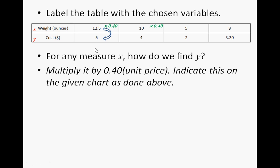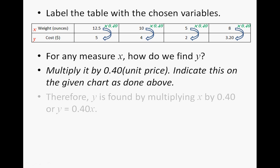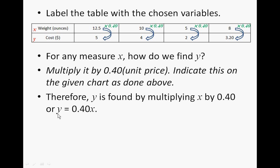Go ahead and do that with the second column — we're multiplying by 40 cents, and 10 times 40 cents is going to be $4. Do the same thing for the third and fourth columns. Therefore, Y is found by multiplying X by 40 cents, and our equation is Y equals 40 cents times X. You might ask why we don't write 40 cents times X equals Y — it's because we want to know what the price is. There's a reason later in math why we start with Y equals the constant times X.